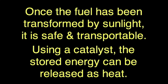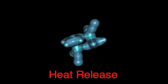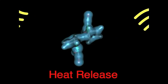That means once transformed by the sun, it stays stable, making it safe and transportable. Then, using a simple catalyst, the molecule can be made to go back into its original state. As it goes back, it releases that stored energy as heat.